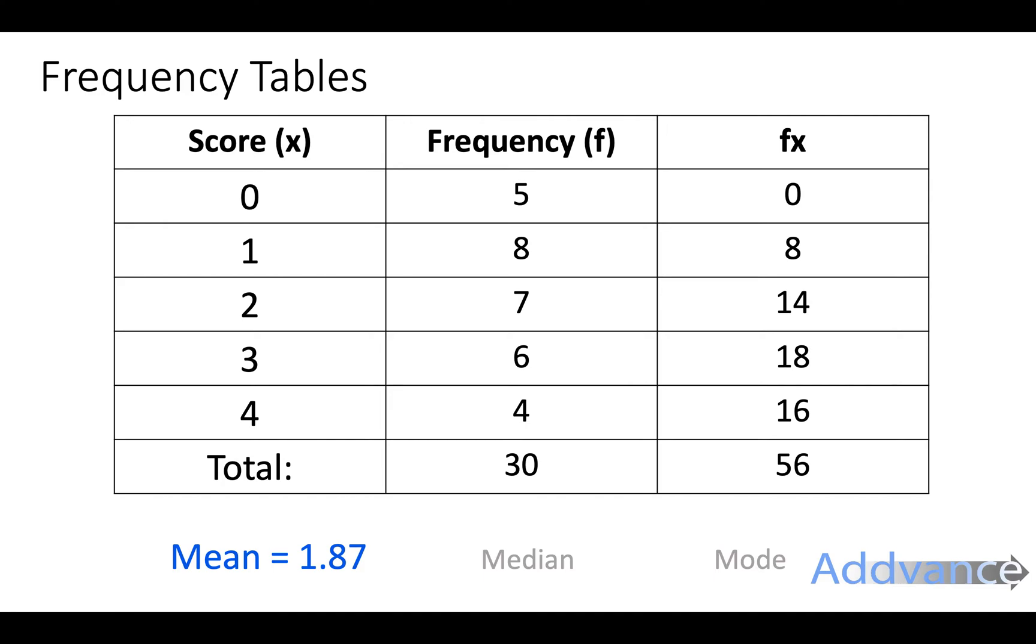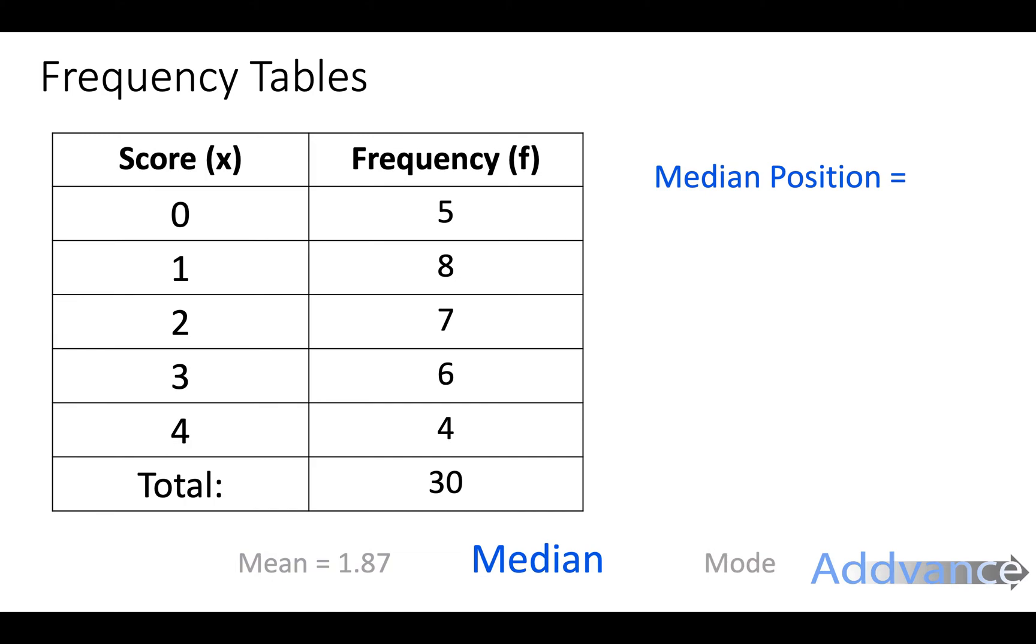Now let's look at the median. The median is the middle number, and to know where the middle number is, we look at how many people are in total. There are 30 people in total, and we're going to add one and then divide by 2. 30 plus 1 divided by 2 is 15.5. Use your calculator, we're looking for the 15.5th score.